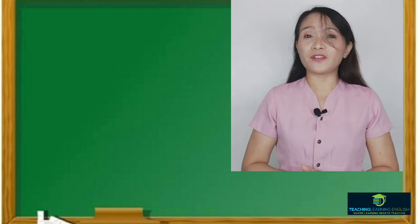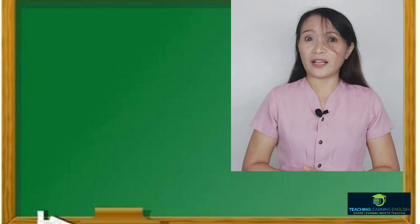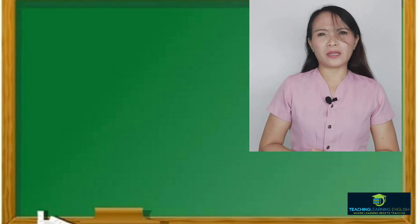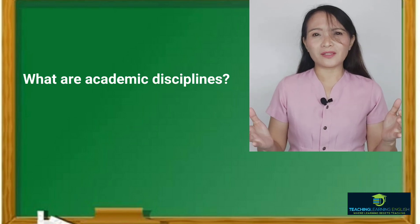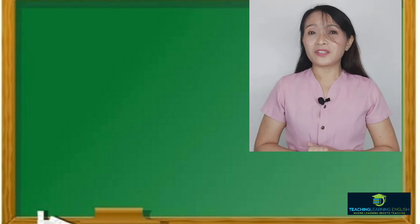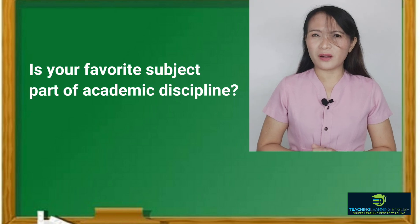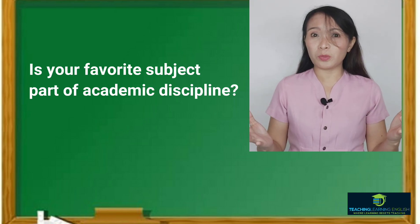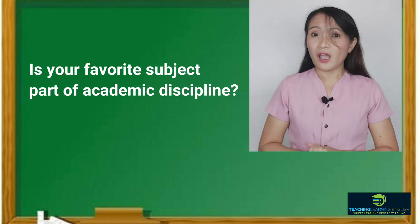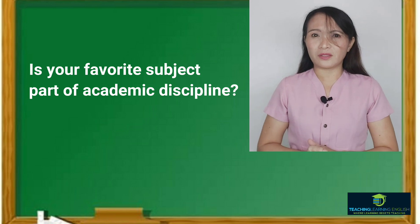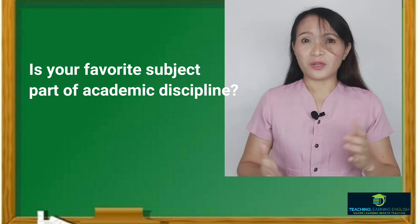Since we already finished discussing the structure of academic text, let's proceed to academic discipline. What are some academic disciplines? The specific subjects you have in school are just part of the academic discipline in college or university. In senior high, we are into different tracks. Let's get to know them.